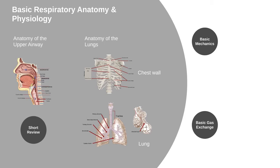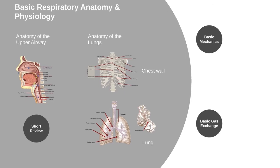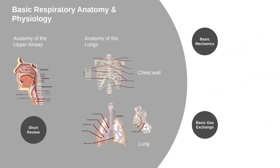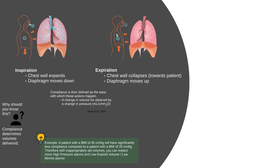Two parts of the video I'd like to recap are mechanics and gas exchange. In lung mechanics, inspiration is achieved when the diaphragm contracts and moves down and the chest wall moves up, creating negative pressure and allowing a volume of air to fill our lungs. Expiration occurs when the reverse happens — the chest wall collapses and the diaphragm moves up — creating positive pressure and pushing air out.